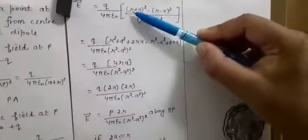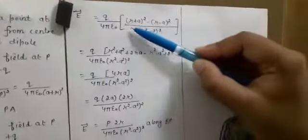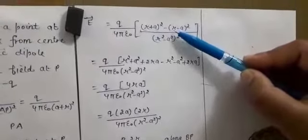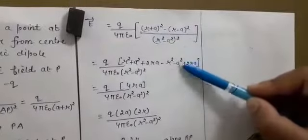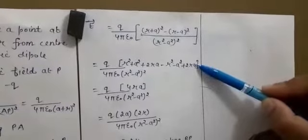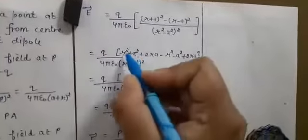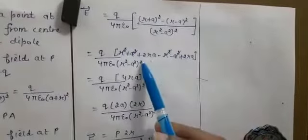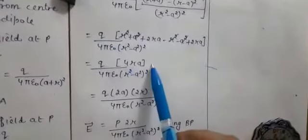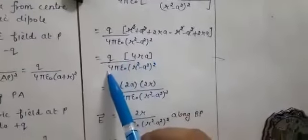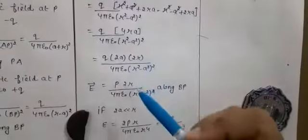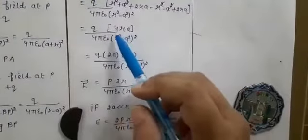The numerator becomes (r + a)² minus (r − a)². Applying the formulas for (a + b)² and (a − b)²: r² + a² + 2ra minus (r² − 2ra + a²). After cancellation, r² cancels and a² cancels, leaving 2ra + 2ra, which is 4ra. So the electric field equals q upon 4πε₀ multiplied by 4ra divided by (r² − a²)².